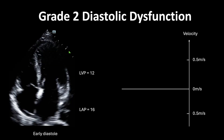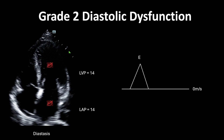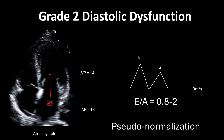In grade 2 diastolic dysfunction, LV pressure increases further to 16 in early diastole, and this is transmitted to the LA, increasing LA pressure from 12 to 16. The pressure gradient of 4 is the same as in a normal heart, so a normal-sized E-wave is produced. During atrial systole the LA generates a slightly higher pressure than the LV, producing an A-wave of similar height to normal. The relationship between E and A therefore looks normal — this is why grade 2 diastolic dysfunction is often referred to as pseudo-normalization.